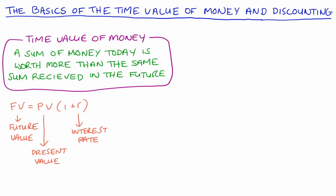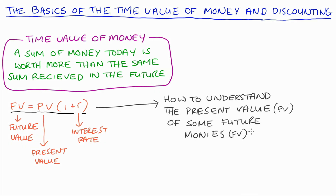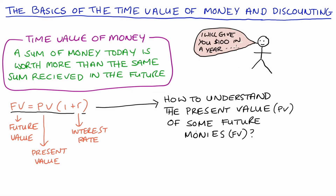Our formula tells us about the future value of some present amounts, but very often we need the opposite relationship — we want to know how to value some future payment that will happen later on. For instance, if someone promises to give you a hundred dollars in a year's time for doing a job or investing in a project, the question given the time value of money is: how much is that promise worth to me now? We know the hundred dollars in the future is worth less than a hundred today, because if I had it today I could earn interest on it. So what we want is the present value of that future payment.